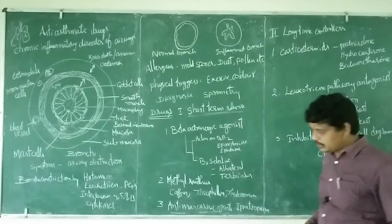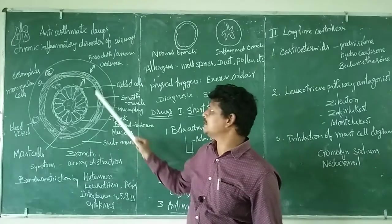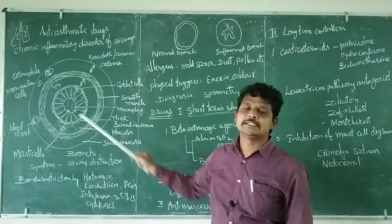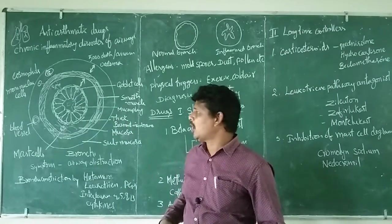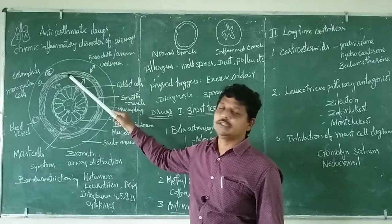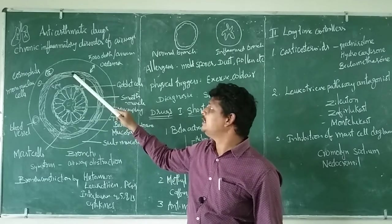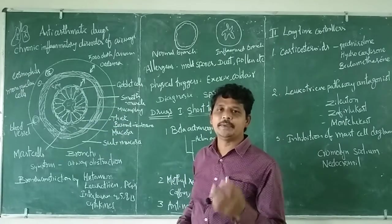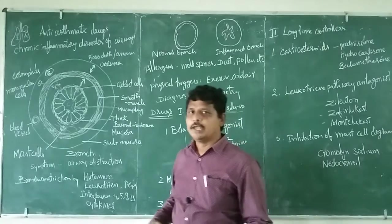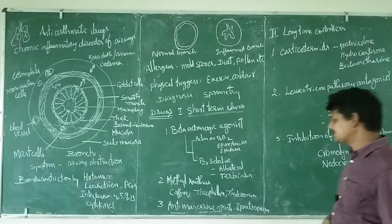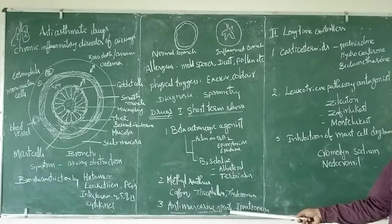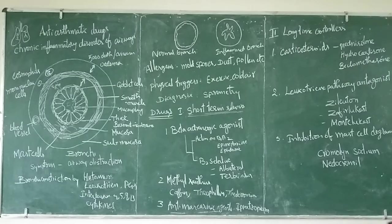Next, antimuscarinic agents. As we discussed, there is a smooth muscle consisting of muscarinic receptors. Upon binding of acetylcholine on this muscarinic receptor, the smooth muscle gets contracted. So here we are blocking the muscarinic agents. Example is ipratropium.